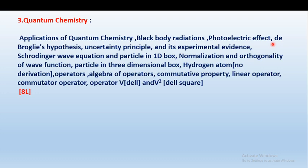We will study the uncertainty principle and its experimental evidence. One of the most important points is the Schrödinger wave equation and particle in 1D box, then normalization and orthogonality. These terms may be new for you, but we will study what they all mean in detail in the quantum chemistry chapter.